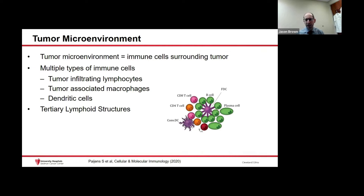A bunch of these cell types can actually come together to form something called a tertiary lymphoid structure, as shown in the diagram. There have been reports in bladder cancer that increased formation of these tertiary lymphoid structures, which can be seen by a pathologist under a microscope, can predict more response to immunotherapy.